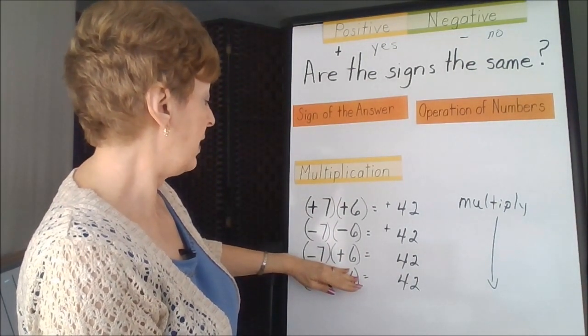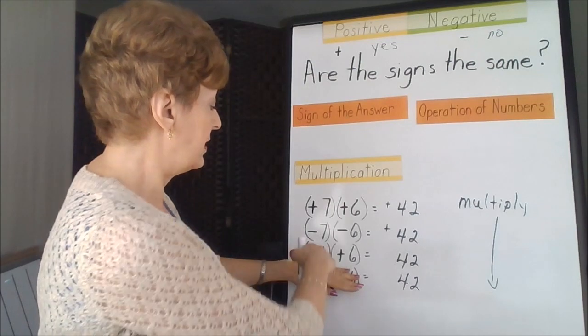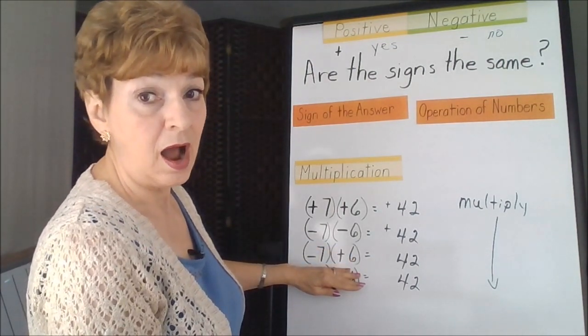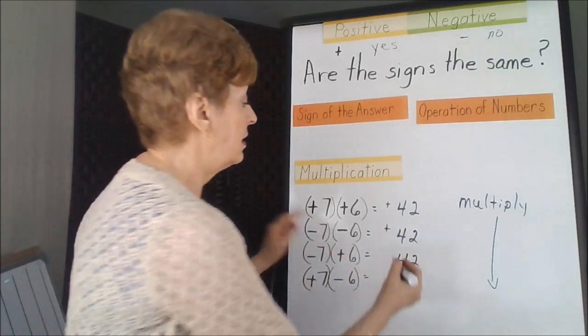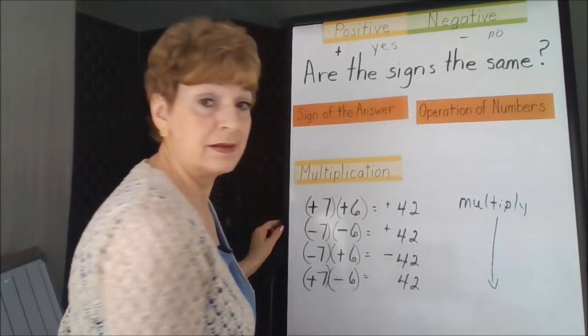In this case, we have one negative. The seven is negative. The six is positive. Are the signs the same? No. That means negative 42.